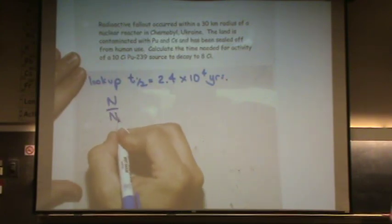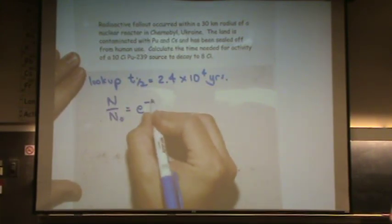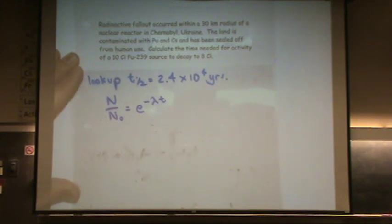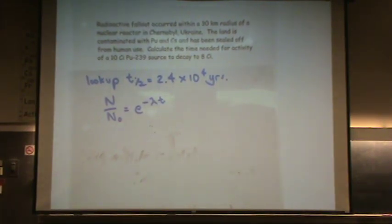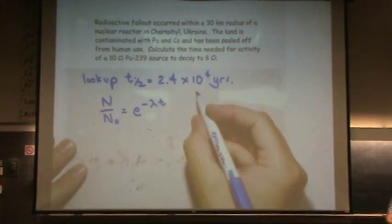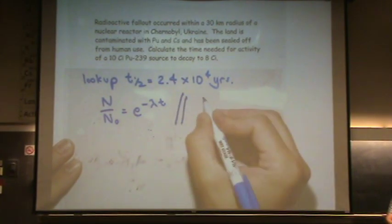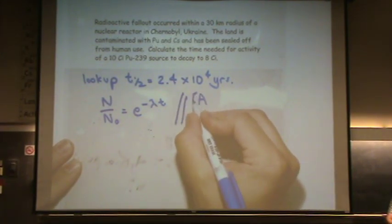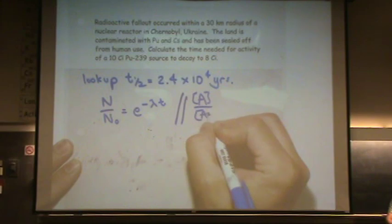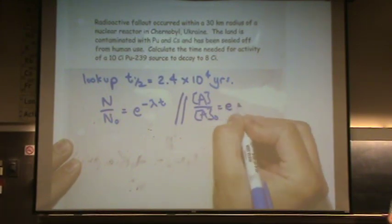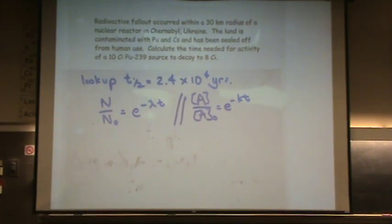N over N naught equals e to the minus lambda t. If you prefer your old formula, that's A over A naught e to the minus kt. Whatever, it's the same formula. Here, of course, we're using concentration units from kinetics. But any units will really do. So in this case, we're going to use the curie unit.